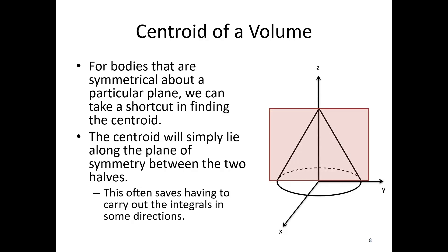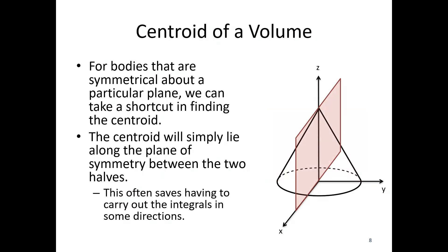If I look at my cone and put a plane on the yz axis, I've got a front and back. The front and back are mirror images of one another. When that occurs, if there's an equal volume in front of and behind something along that line of symmetry, the centroid has to exist on that plane of symmetry. I can do the same thing in the x direction — drawing a plane of symmetry right down the middle where the left and right are mirror images, so the centroid has to exist along that plane.